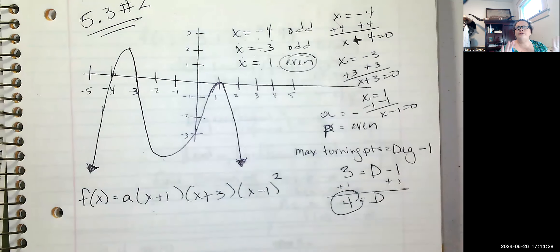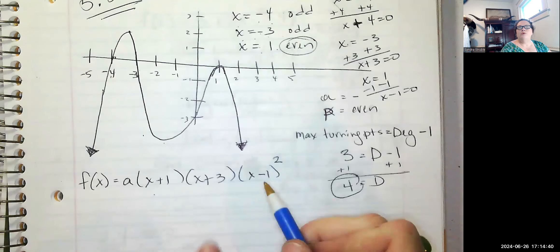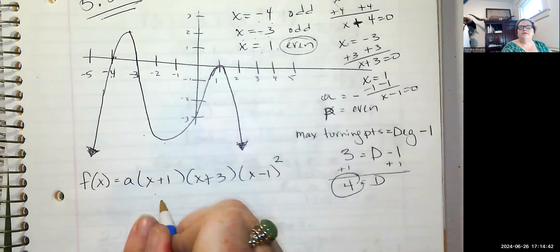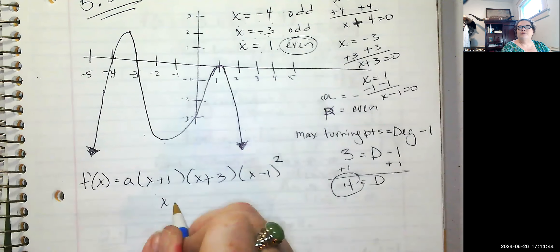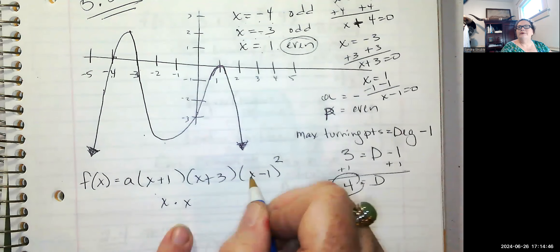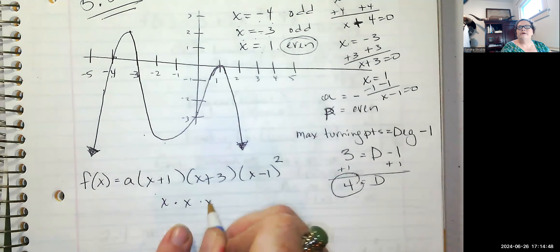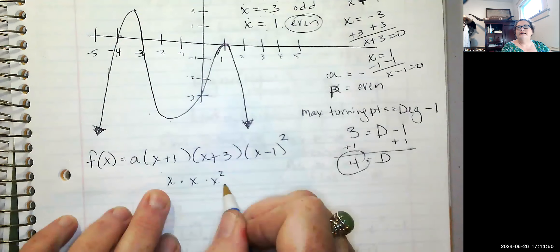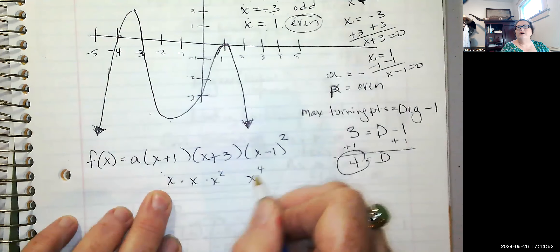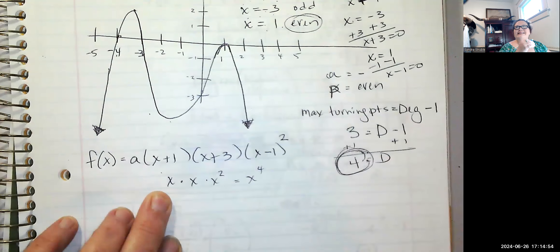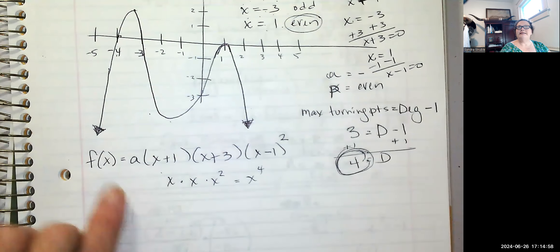Let's check our degrees for this polynomial where we're at right now. We've got an X, we've got an X. Both of those have powers of one. And then we've got an X that's squared. So our degree is X to the fourth right now. And that's great because that's the least degree we can have for this polynomial. The next piece of this is to find A.